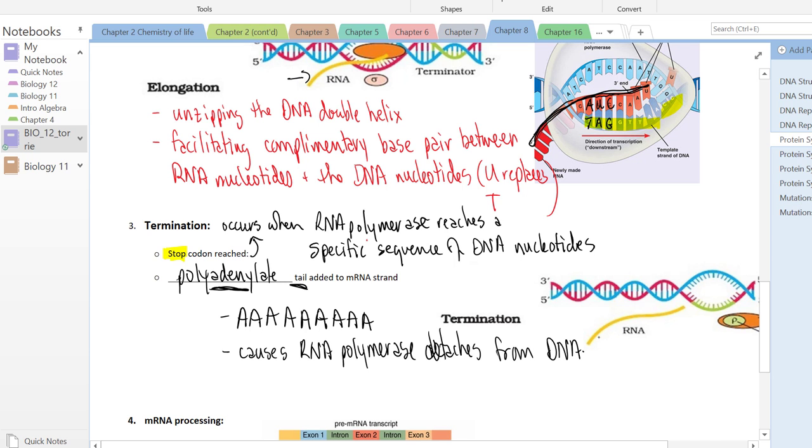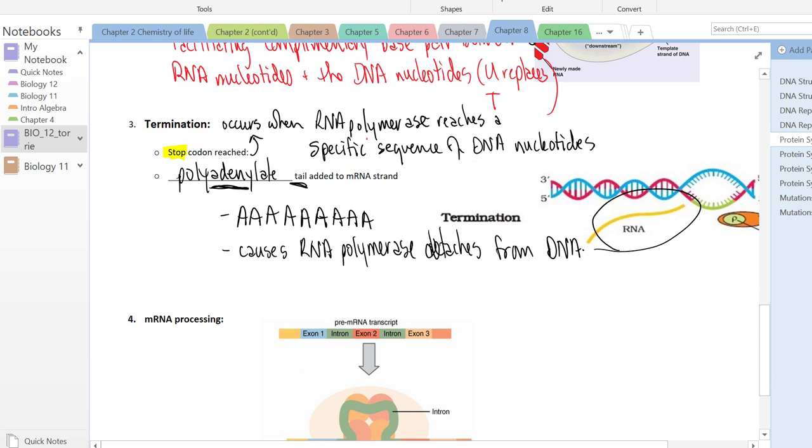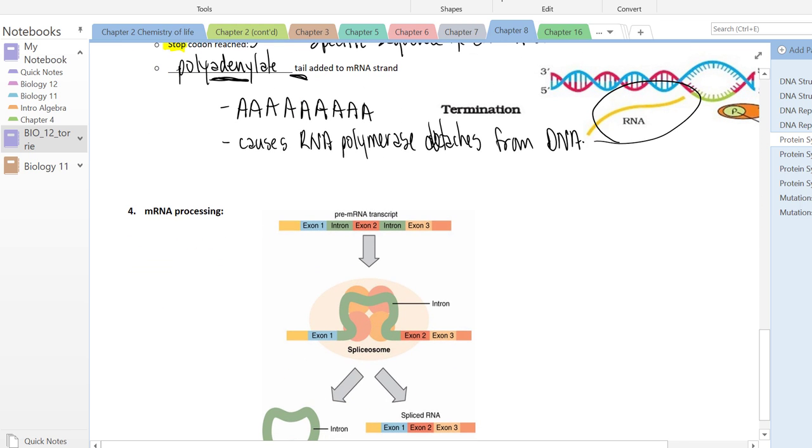At that point we're left with a strand of mRNA. Before that mRNA heads off to the cytoplasm, there's a process of mRNA processing that occurs which is essentially an editing of extraneous sections. If you remember, 2% of our DNA codes for proteins.